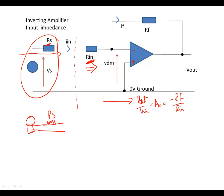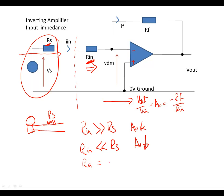Therefore, if R in is substantially greater than RS, no problem — AV is okay. However, if R in is significantly less than RS, your AV is going to be massively reduced. If R in equals RS, you might get maximum power transfer theorem, but your AV is probably going to be around about half. Why? Because this signal here is effectively V in, and we would be able to write V in is equal to VS as a function of R in over R in plus RS.